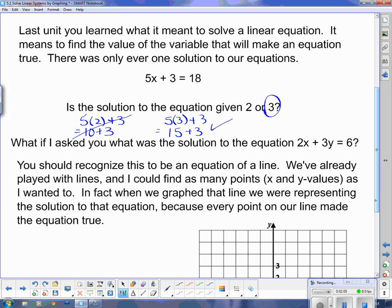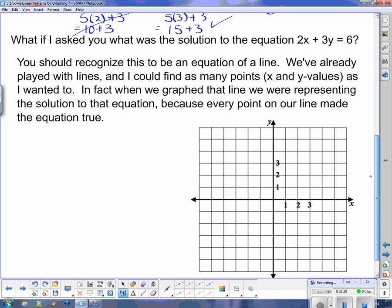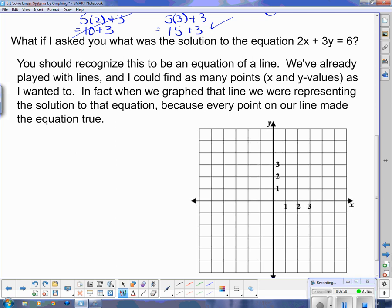So when we played with lines, we found as many points as we wanted to, and when we graphed them on our grid, what we were doing was giving a representation of the solution to this equation, because it doesn't have just one solution. It has a whole bunch of them. It has an infinite number of solutions. And so we had to plot them on a graph to show what they were, because how else are you going to represent infinity? Well, you just put arrows on the end and let it go off as far as it wants to.